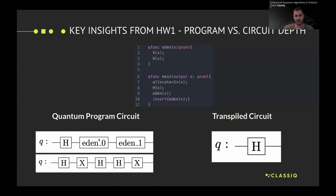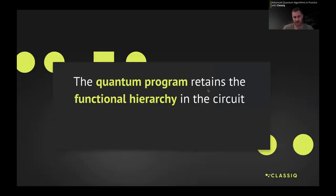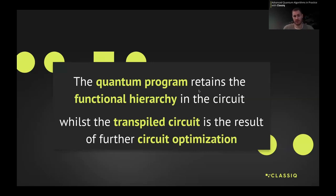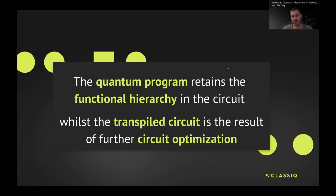However, the transpiled circuit is just a single Hadamard gate. Why? Because two consecutive identical gates cancel out - Hadamard after Hadamard is identity, and X after X is identity. So we are left with just the Hadamard gate. The quantum program circuit retains the functional hierarchy in the circuit as we see here, while the transpiled circuit represents further circuit optimization - canceling out two identical gates that are consecutively applied on a specific qubit. We have information about both from the Classiq visualization tool.